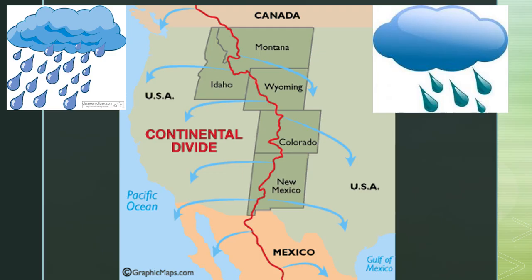All the rainwater that falls on one side of the divide will flow into one basin, and the precipitation that falls on the other side will flow to another basin.